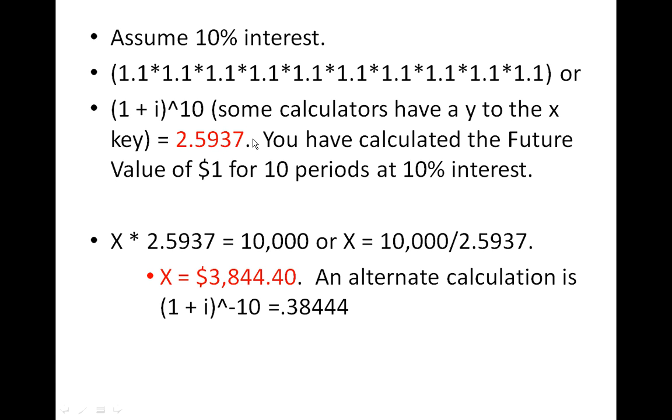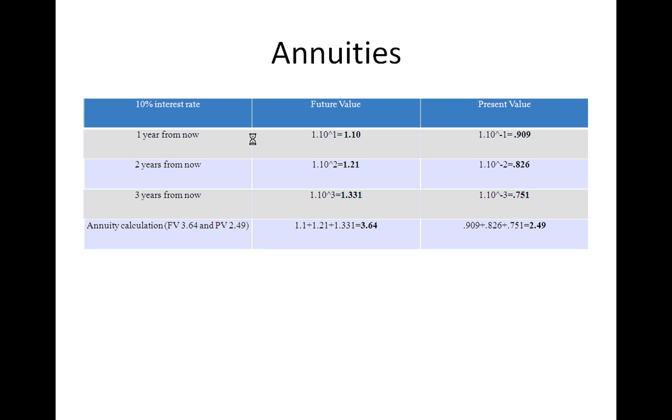And I've shown you this here in the tables. We can calculate the present value and future value. And what I've shown you here is what would be in the present value table and the future value table at 10%. So one year from now, the future value of $1 is $1.10. Two years from now, it's $1.21. Three years from now, it's $1.33. The inverse of that, 0.751 and so on.